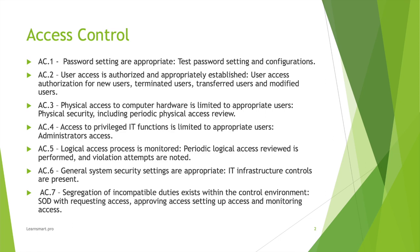The next control under access management is ensuring that user access is authorized and appropriate. You always want to make sure the user access is authorized and based on the job function. If the user access is not authorized, that means the user didn't go through the appropriate request and approval process from their manager or application owner. You need to ensure access is both authorized and appropriate.